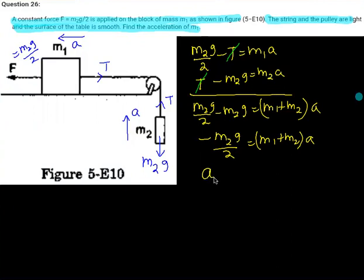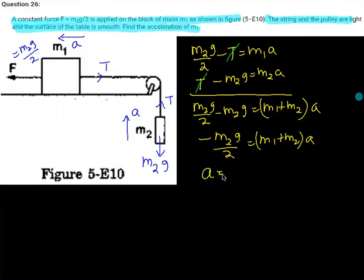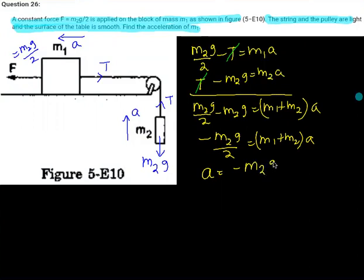Then acceleration a is, so here the acceleration is negative m2g by 2(m1 plus m2). So if your answer is negative, it means that the direction is reversed, which means that m1 will move to the left side and m2 will move down to the right side.